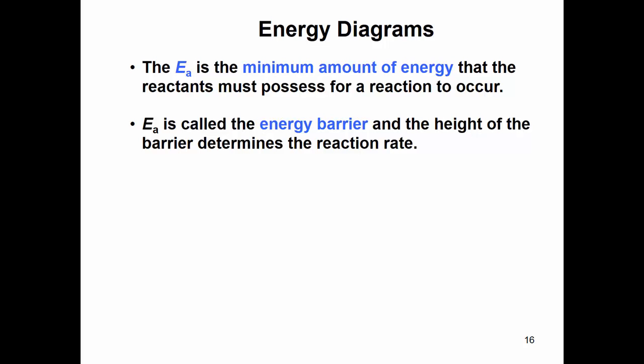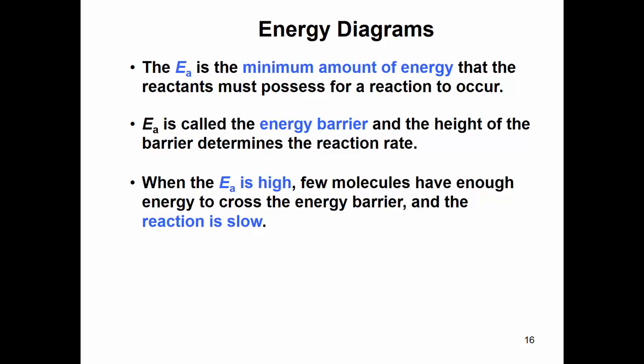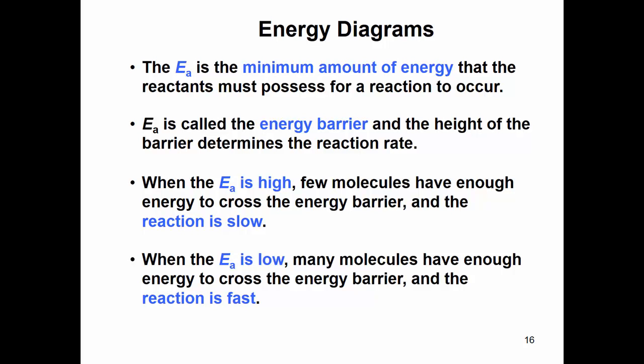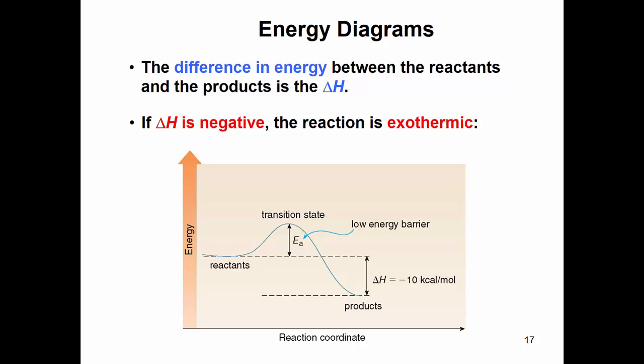The activation energy is also called the energy barrier, and its height determines the reaction rate. If you have a really high activation energy, few molecules have enough energy to cross the energy barrier and the reaction is slow. When the activation energy is lower, many more molecules can cross over it and the reaction is faster. Delta H is still negative — the products are lower than the reactants — but activation energy is the difference between the transition state and the reactants, whereas delta H is the difference between the products and the reactants.